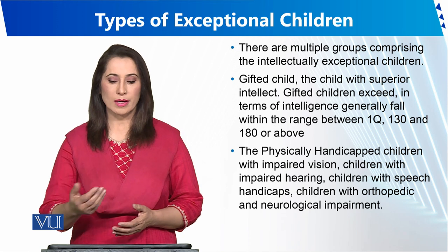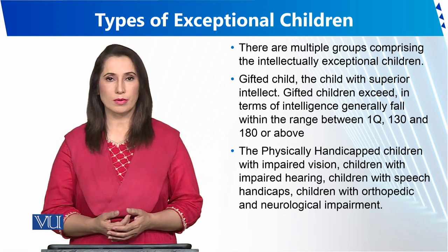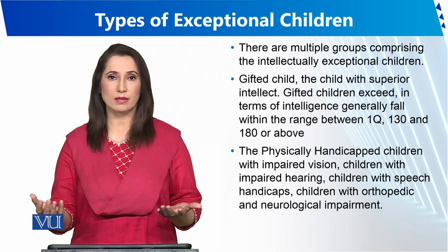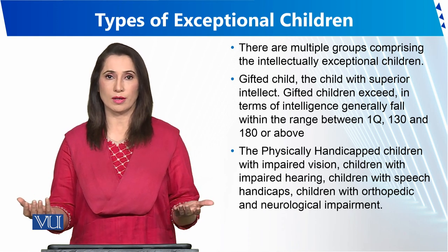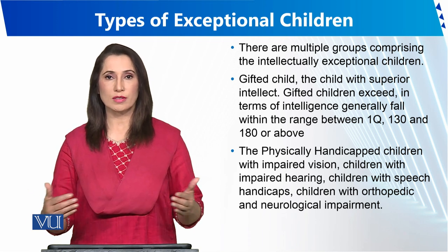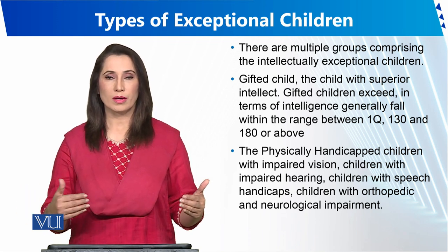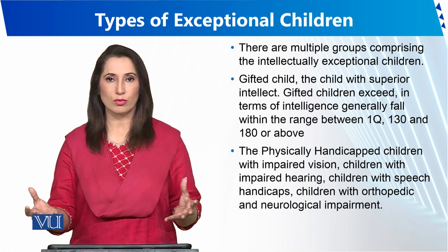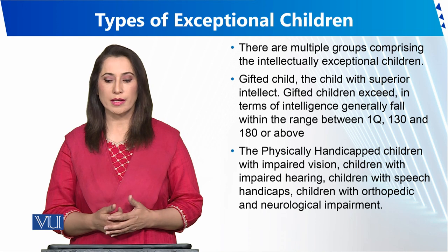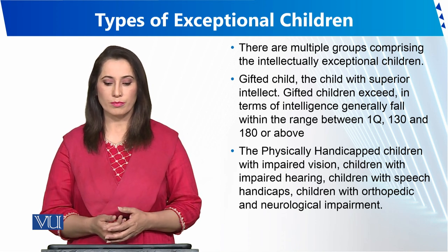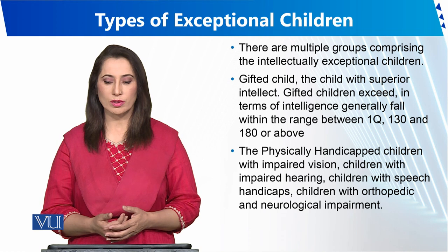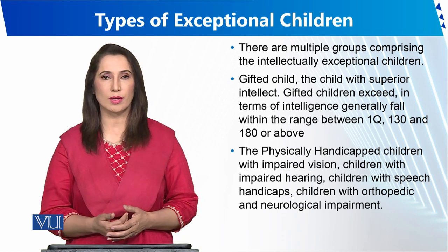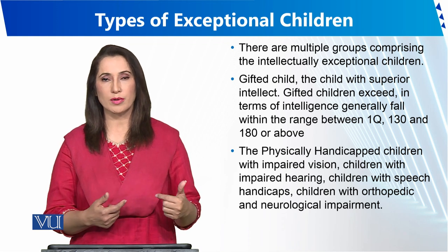After gifted children, the second group is physically handicapped children. These children cannot participate in regular schools in the same way as other children — this is why we call them exceptional. They have a physical problem. Physically handicapped children include those with impaired vision, impaired hearing, and speech handicaps.